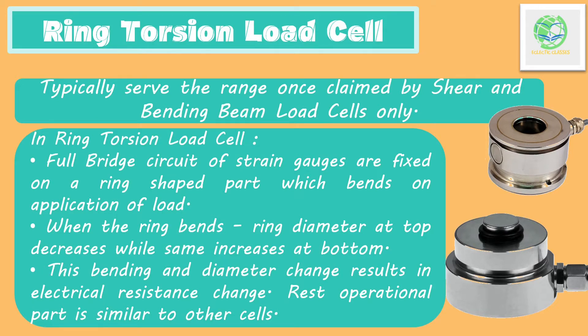In the case of a ring torsion load cell, full-bridge circuit strain gauges are bonded to a ring-shaped part which will bend when a load is applied. While bending, the ring diameter at the top decreases while the same increases at the bottom. In this whole process, the electrical resistance changes, which enables measurement of the load applied.